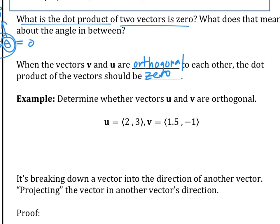The next question: figure out if u and v are orthogonal — what should you do? You compute u dot v, and what you're looking for is zero. If it's zero, it's orthogonal. If it's not zero, it's not orthogonal. Can you do the dot product in your head really fast? Are they orthogonal? Yes — our dot product is zero.